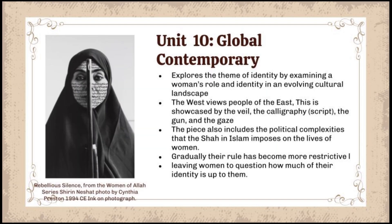For unit ten, global contemporary, we have Rebellious Silence. This piece explores the themes of identity by examining a woman's role and identity in an evolving cultural landscape in the Middle East. It shows how the West views people of the East, showcased by the veil, the calligraphy or script, the gun, and the gaze. The piece also includes the political complexities that the Shah and Islam impose on the lives of women. Gradually the rule has become more restrictive, leaving women to question how much of their identity is up to them.